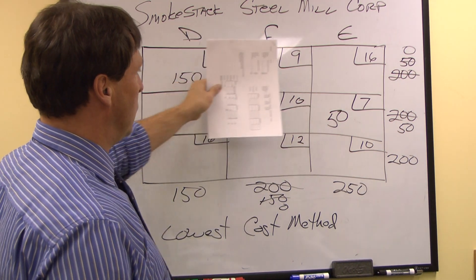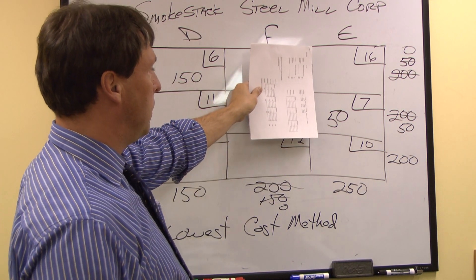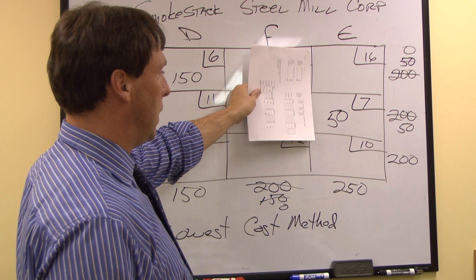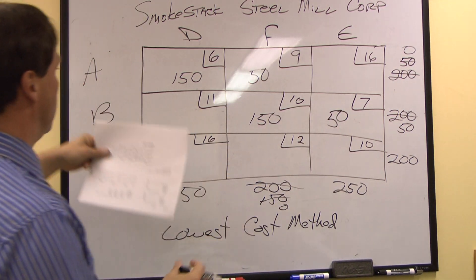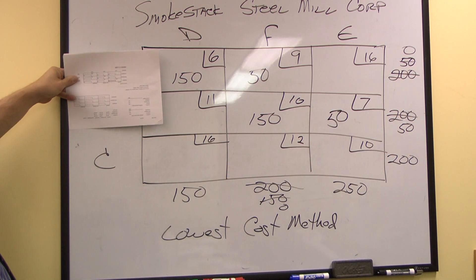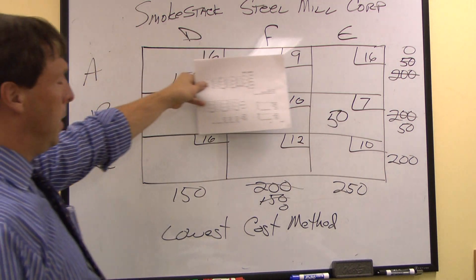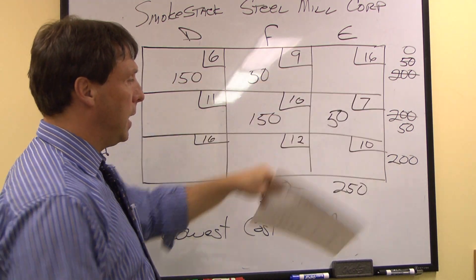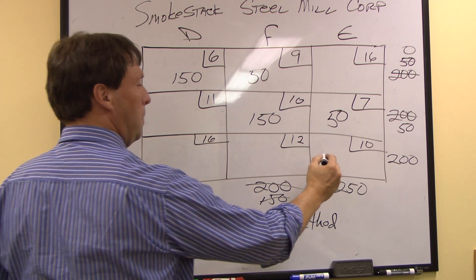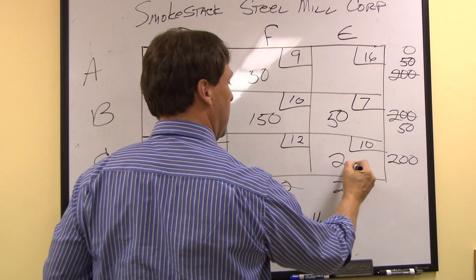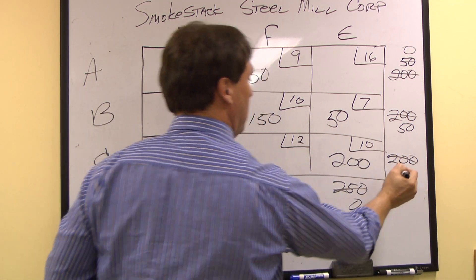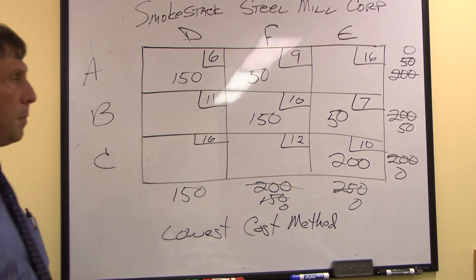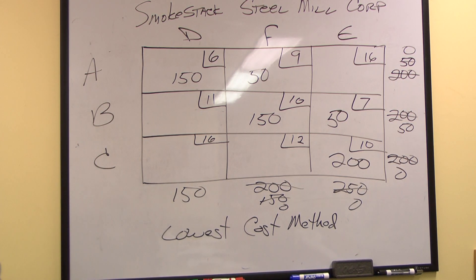I've satisfied Detroit and Fort Worth. All I have to do is satisfy Elizabeth. Supply is gone from Anaheim and Birmingham, so the only place left is Cleveland. And that's my initial feasible solution.